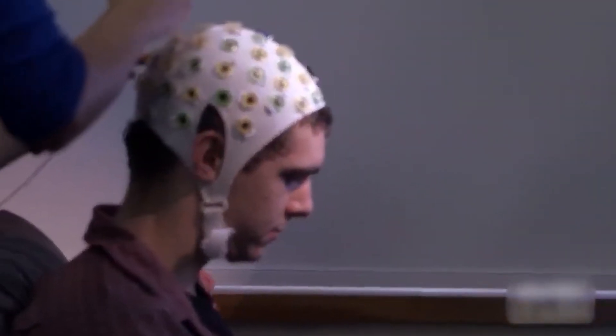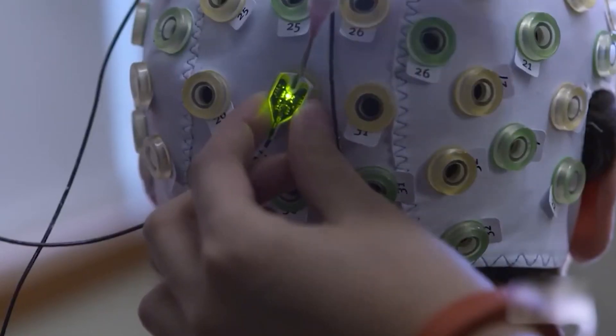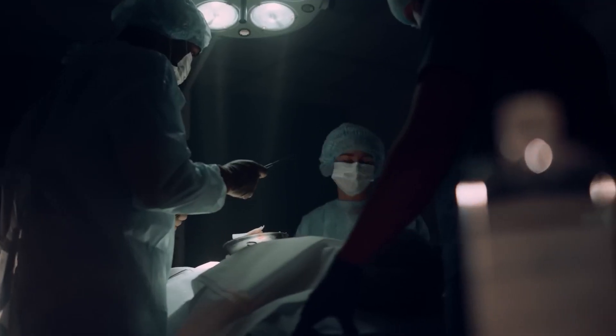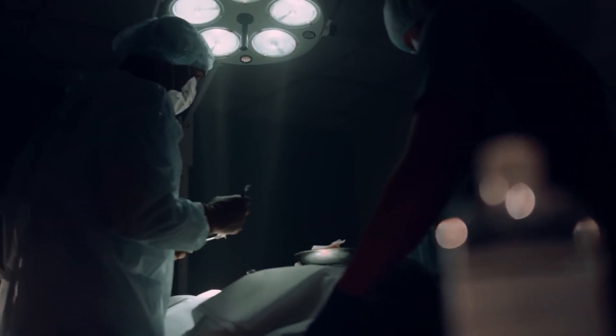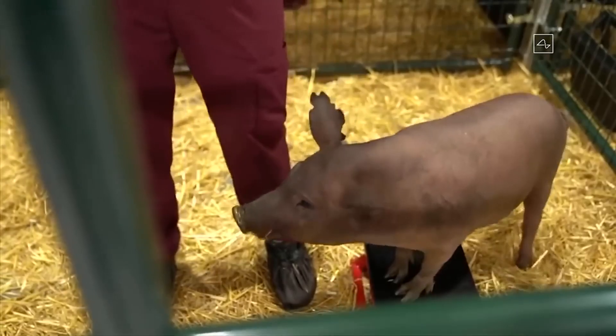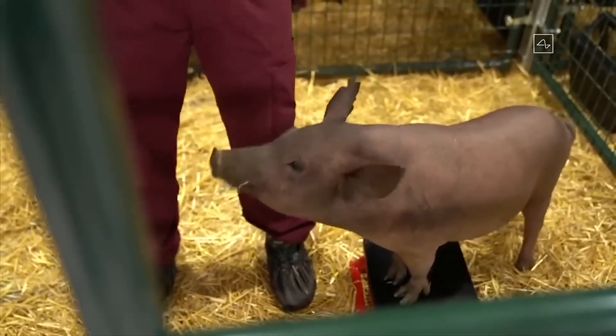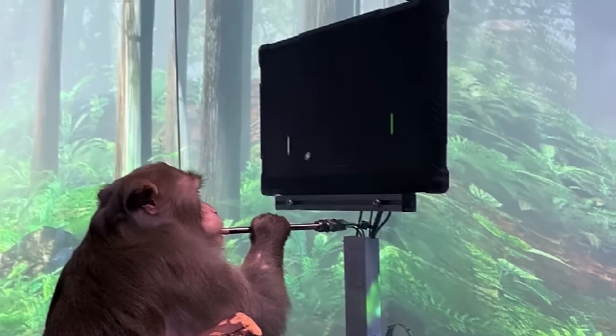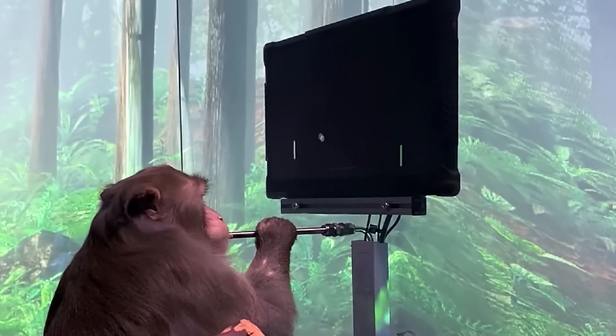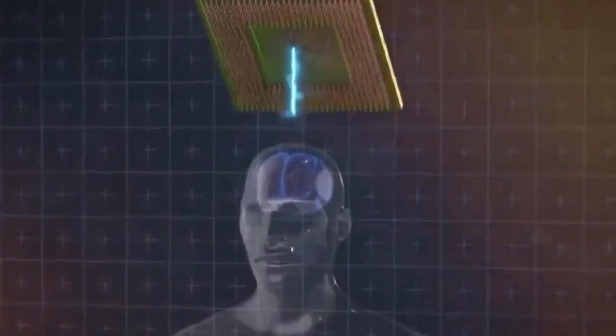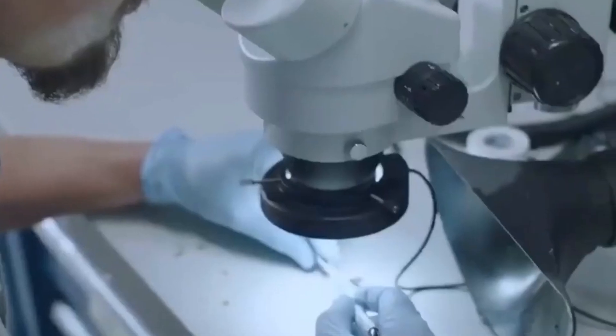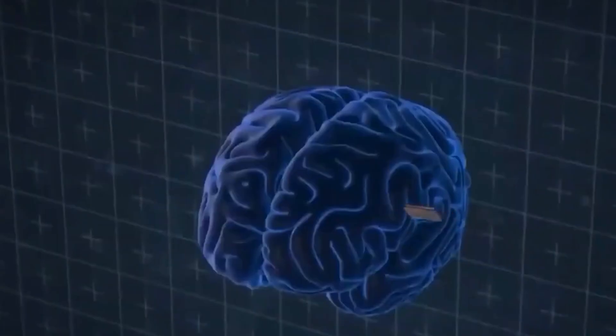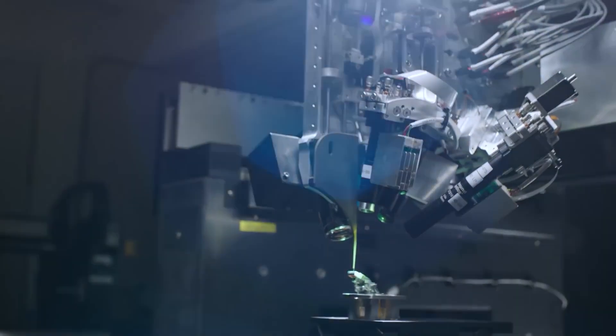Although the idea of implanting electronic chips into the human brain may sound daunting, it has proven to be remarkably effective. In the initial stages of development, Neuralink achieved an impressive 88% success rate in animal testing, primarily with macaque monkeys. Moving forward to human clinical trials, even greater progress is expected. Remarkable advancements have also been made in Europe, thanks to the efforts of a research team in France and Switzerland.